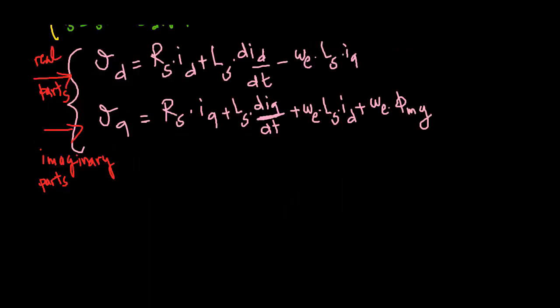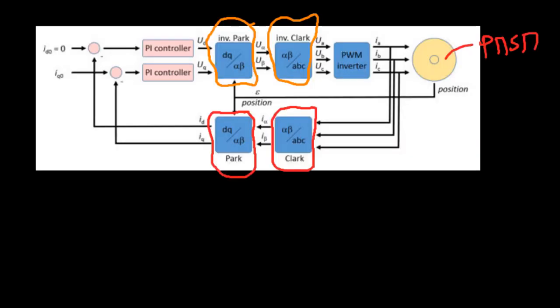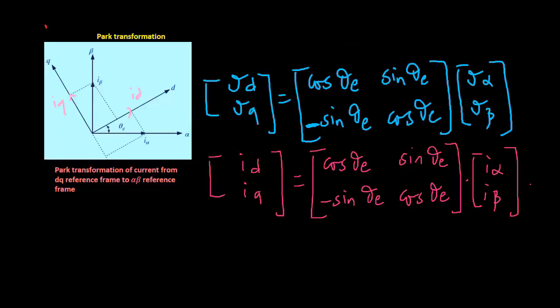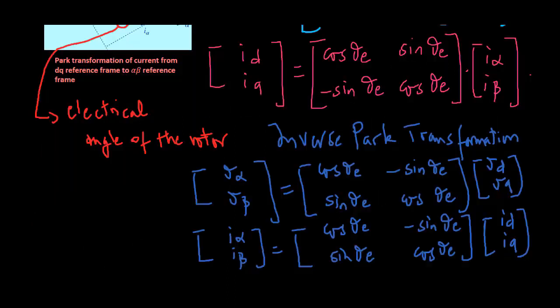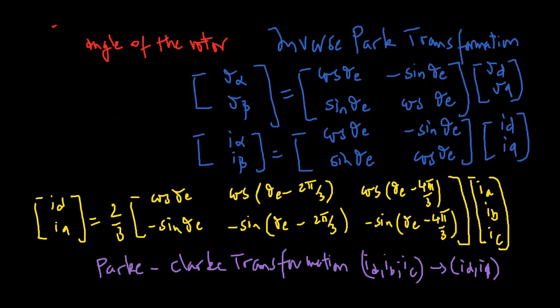There is a unique relationship between the variables in the alpha-beta reference frame and those in the DQ reference frame. The transformation of real and imaginary components in the alpha-beta frame to their counterparts in the rotating DQ reference frame is achieved by the so-called Park transformation, as shown in this figure, which gives the current and voltage relations between the two reference frames. Beta E is the angle between the two reference frames, and also the electrical angle of the rotor. Inversely, the inverse Park transformation is defined accordingly. Combining the Clark transformation with the Park transformation gives the Park-Clark transformation from three-phase values to their representations in the DQ reference frame.